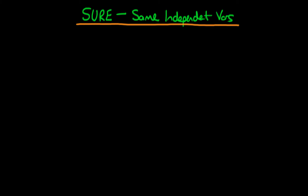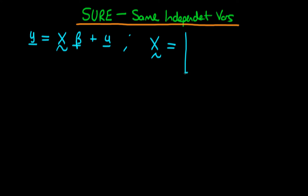In this video, we're going to consider a SUR system where each of the individuals in our system actually has the same independent variables. Remember, we were able to write down our SUR system in a compact form: y equals x times beta plus u, where the matrix x represents a diagonal matrix where each of the elements along the diagonal is actually a matrix. In the situation where each individual has different independent variables, they represent different matrices.